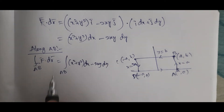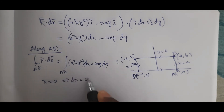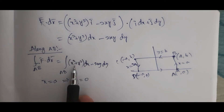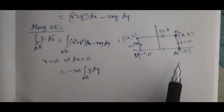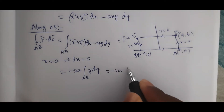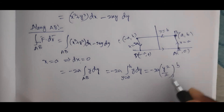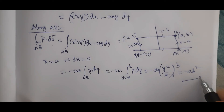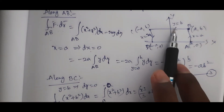Along AB: x = a, so dx = 0. The integral reduces to ∫_{AB} −2ay dy = −2a [y²/2]_0^b = −ab². This is equation number 3.